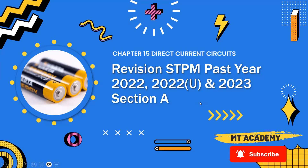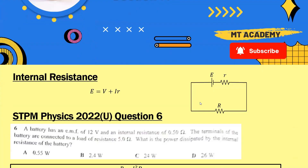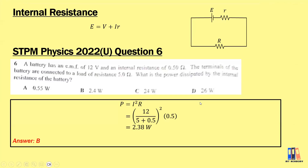Today we continue to discuss the parcel of Chapter 15, Direct Current Circuits. The first topic is about internal resistance, which you already learned in SPM.